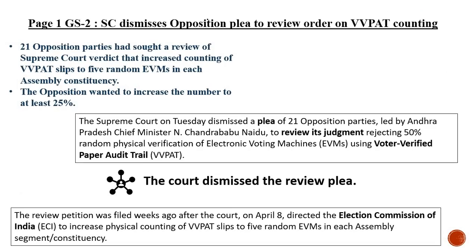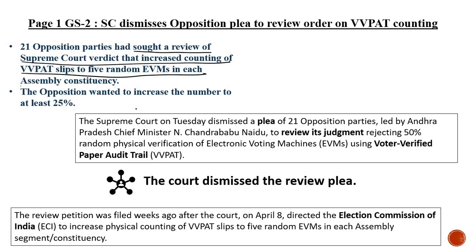Page one news: the Supreme Court has dismissed the opposition's plea to review its order on VVPAT counting. Basically, 21 opposition parties filed a review petition challenging VVPAT counting, claiming technical errors in VVPAT machines. They asked for a review of the SC verdict that increased VVPAT slip counting to five random EVMs per assembly constituency, and wanted to increase it to at least 25%. The Supreme Court finally dismissed this petition.